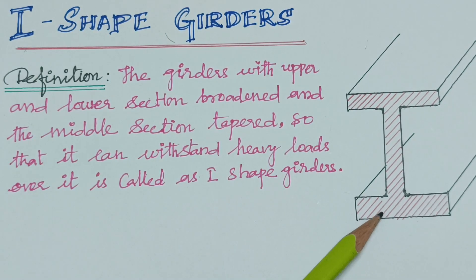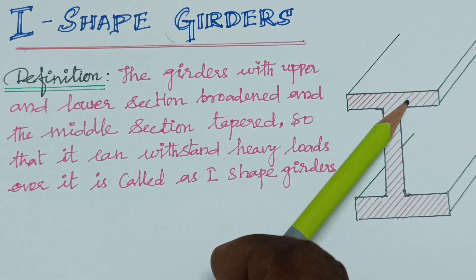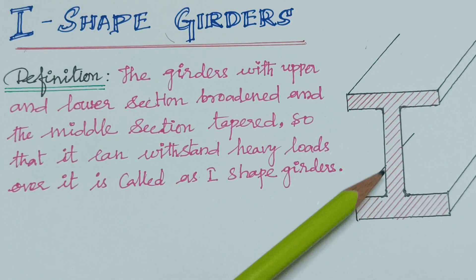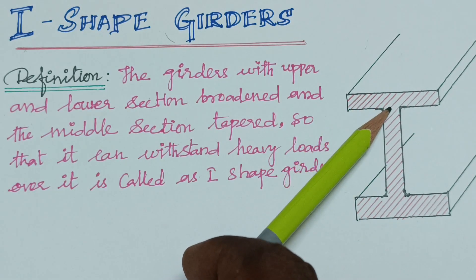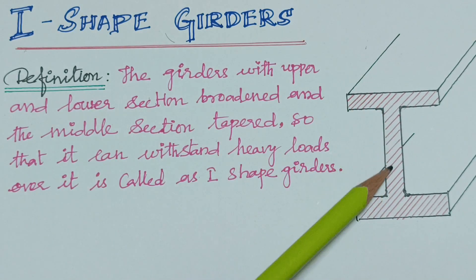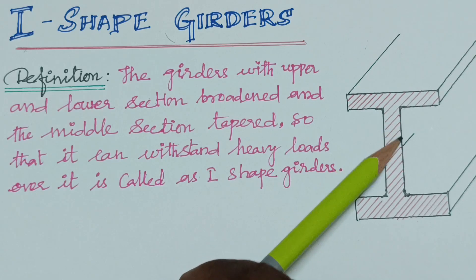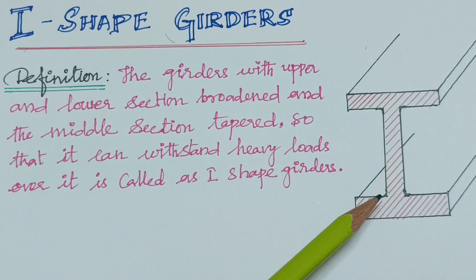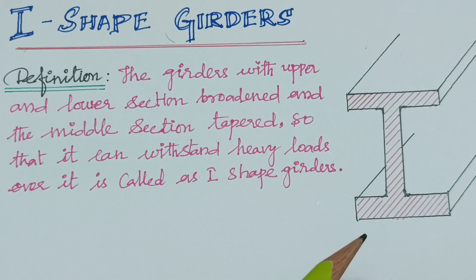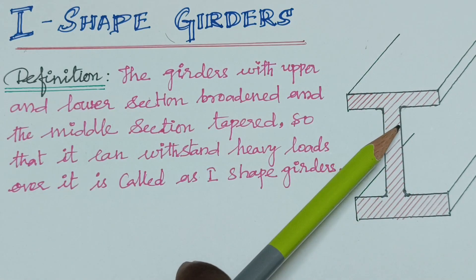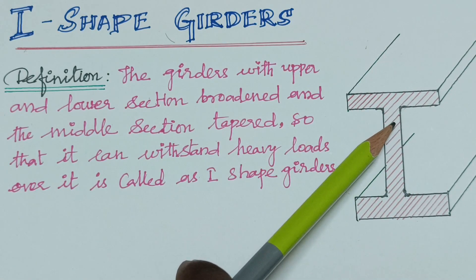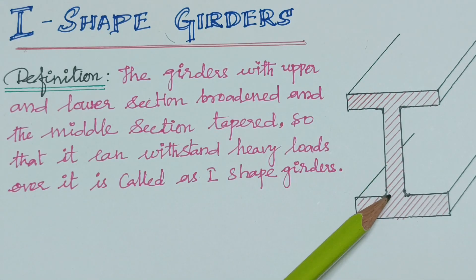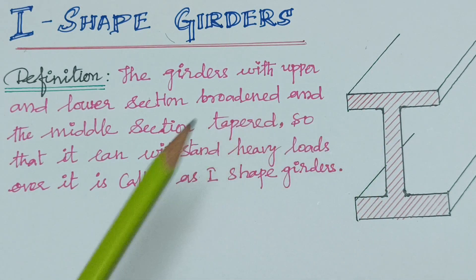In the I-Shape Girder, the top and bottom are broadened while the middle thickness is thin. It is called an I-Shape Girder because its cross-section looks just like the letter 'I'.